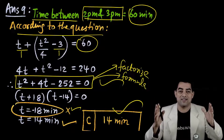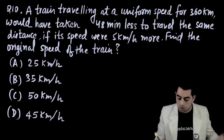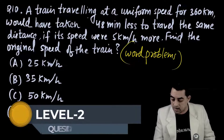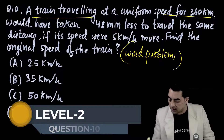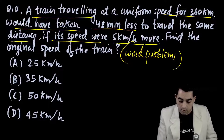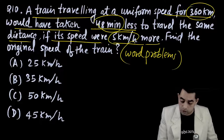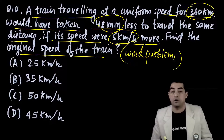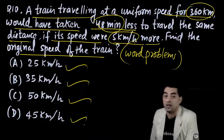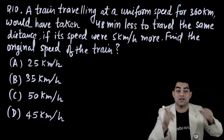This gives T = -18 or T = 14. Since time cannot be negative, T = -18 is rejected. The correct answer is option C: T = 14 minutes.